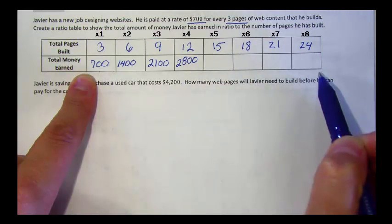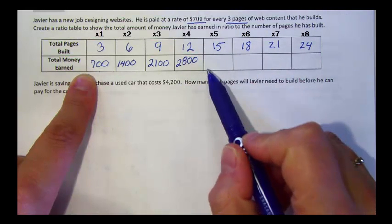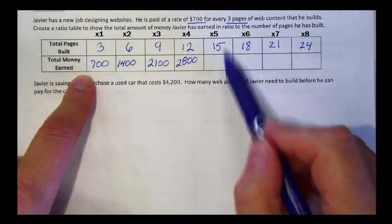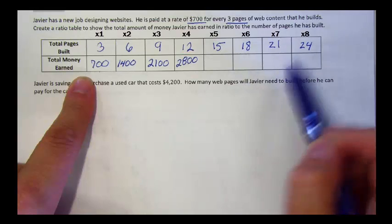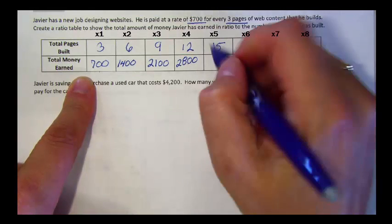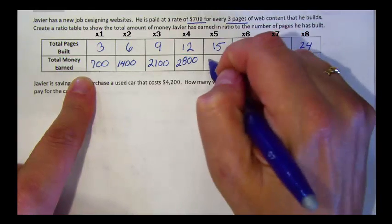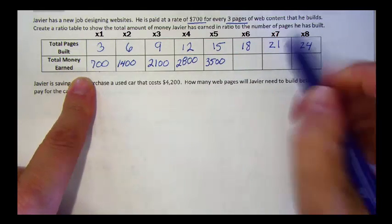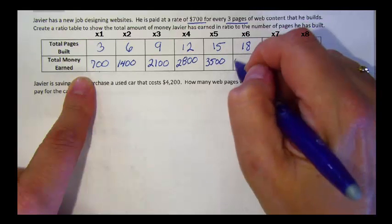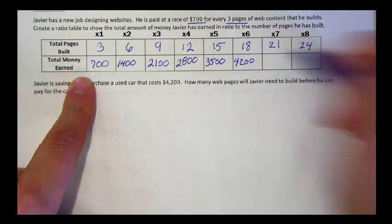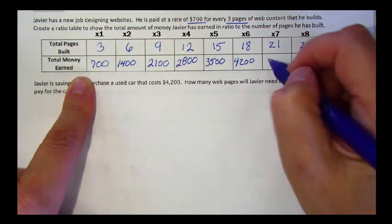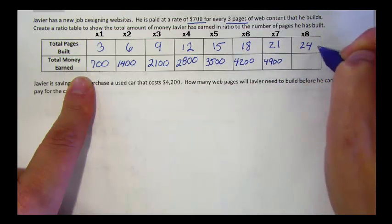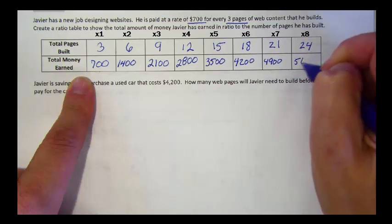And we can finish out the table each time adding $700, or we can look at it as multiplying 700 times the position. So this would be 700 times 5, $3,500. 700 times 6, $4,200. 700 times 7, $4,900. Or 700 times 8, $5,600.